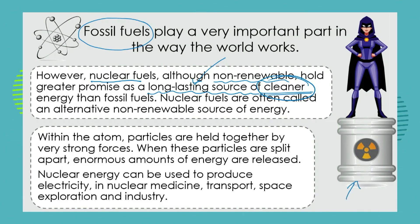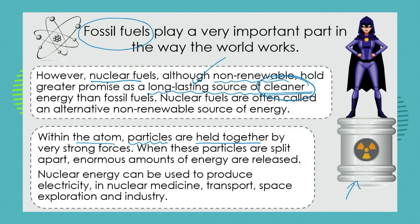How do we get nuclear energy? Within the atom there are little particles — electrons, protons, and neutrons — and those particles are held together by extremely strong forces. If you can artificially split those particles apart, you release the energy that held them together originally. If we can capture this energy, we call it nuclear energy, and nuclear energy can be used to produce electricity.